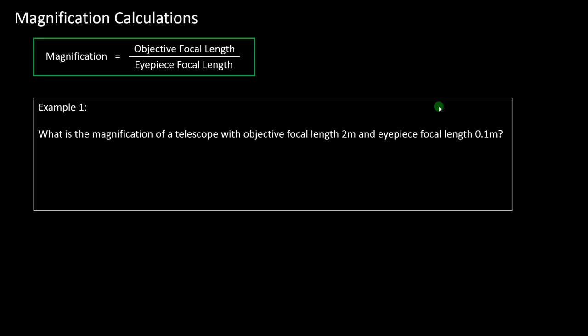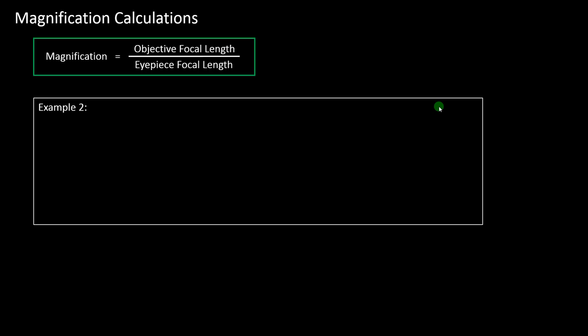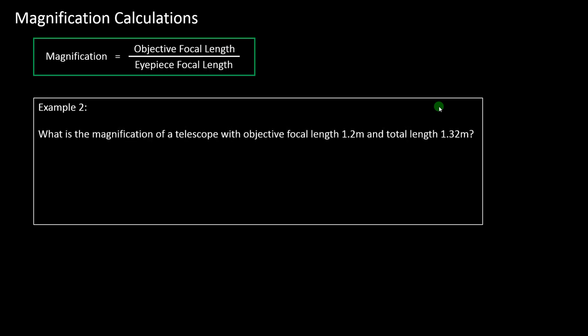This one is straightforward — just put the numbers into the formula, making sure they're in the right place. You're expecting magnification greater than one; otherwise it would be shrinking the image. There are no units for magnification since it's a ratio. Example two — see if you can spot the trick: what's the magnification of a telescope with objective focal length 1.2 meters and total length 1.32 meters? Think about the arrangement of the lenses.